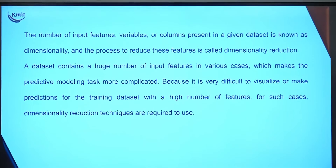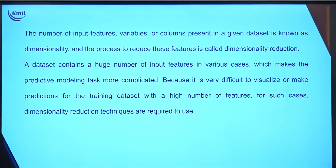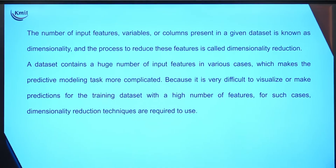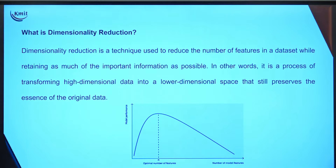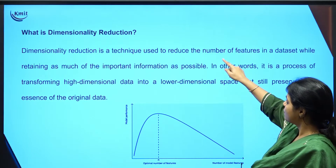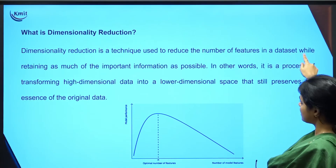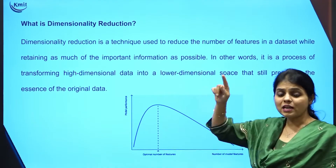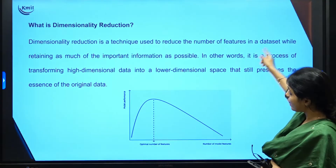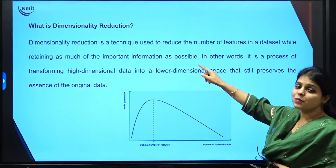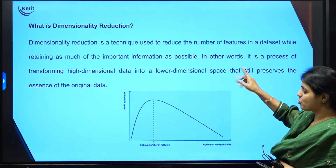It is very difficult to visualize and make predictions for the training dataset if you have more features. For such cases — when you have a large number of input features — we go for dimensionality reduction. Dimensionality reduction is a technique we use to reduce the number of features in a dataset while retaining as much of the important information as possible.